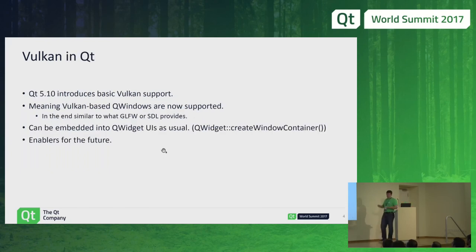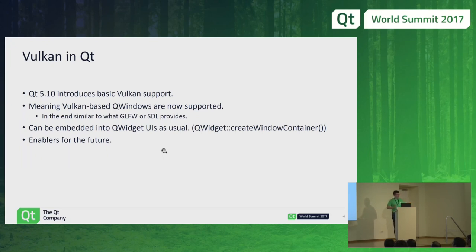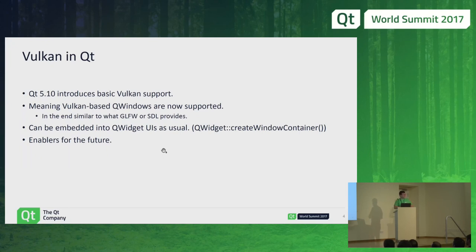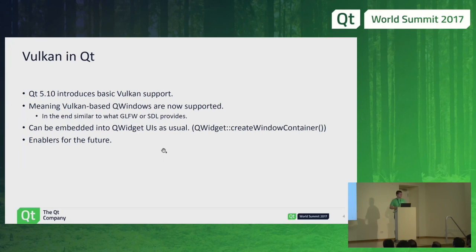The main message is that Qt 5.10 introduces basic Vulkan support. We like to talk about 'basic Vulkan enablers' — what we don't say is that Qt 5.10 introduces full Vulkan support, because Qt has many different UI technologies: widgets, Qt Quick, Qt 3D, Qt 3D Studio — and OpenGL is used in all of these today. Right now we're talking about first steps — adding basic support. This won't mean you can use Qt Quick on top of Vulkan directly, and the Qt 3D renderer is not Vulkan-based in 5.10.